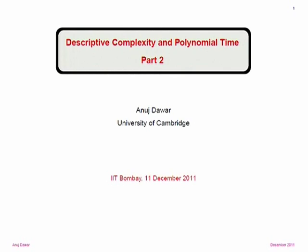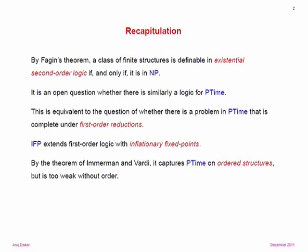I'll start with a quick recap of what I said yesterday in a one-slide version. We saw that Fagin's theorem—whose proof Jam presented—states that a class of finite structures is definable in existential second-order logic if and only if the class of structures is in NP, decidable by a non-deterministic machine in polynomial time.